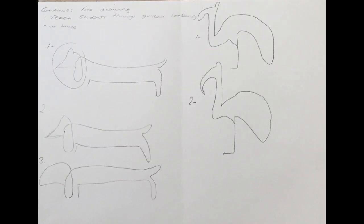Continuous line drawing is another form of drawing and is one in which a single unbroken line is used to develop the image. The steps in this activity are determining a starting point, tracing with eyes, tracing in the air with the hand, then drawing with one continuous line.